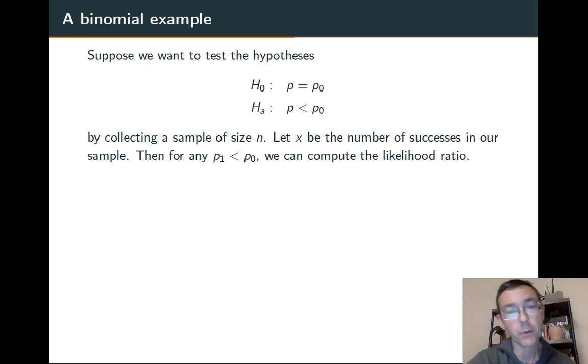This is a pretty typical case where we have a binomial question. We have a null hypothesis p = p₀ and an alternative hypothesis p < p₀. We're going to collect a sample of size n and we're going to reject the null hypothesis if the number of successes that we get is too low.